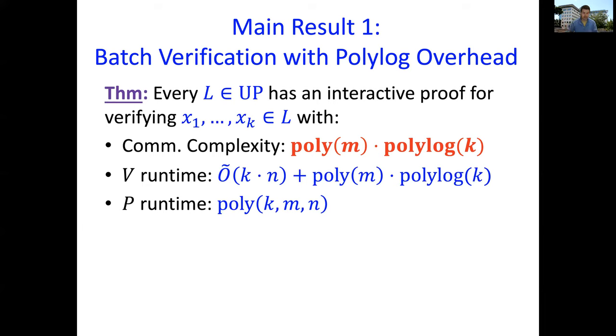That's the communication complexity. In terms of verifier runtime, the verifier has to read the inputs, so that's this K times N part. In some settings where the input is given in encoded format, then even that you can save. The verifier needs to interact, so the poly M times polylog K comes from the interaction. And the prover runs in polynomial time. That's the first main result.